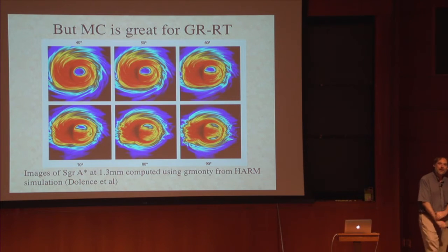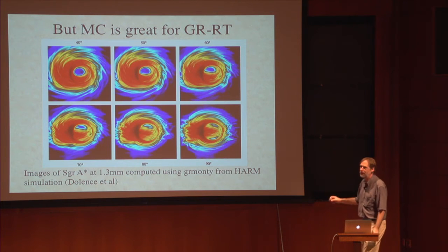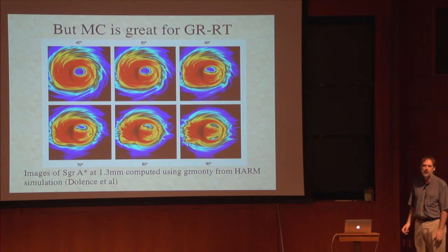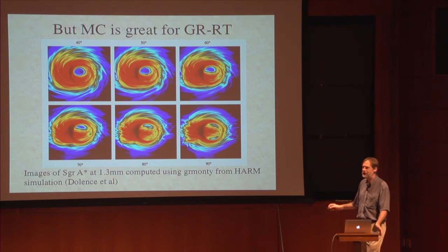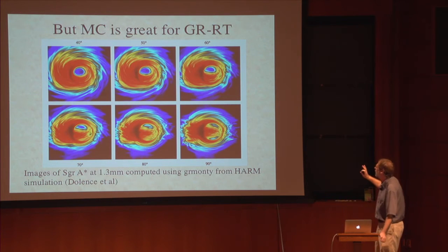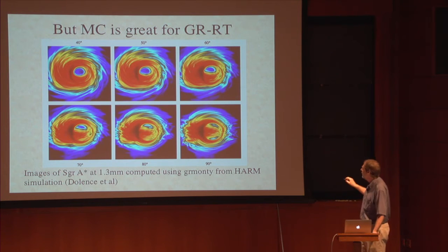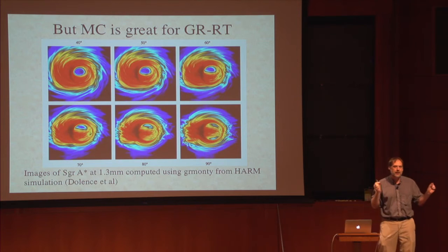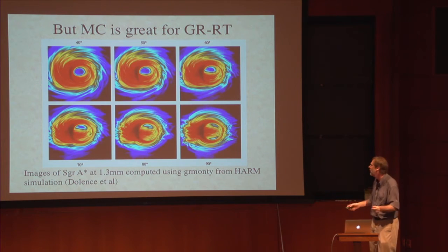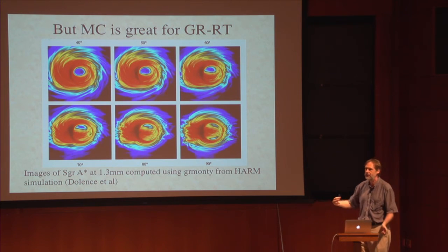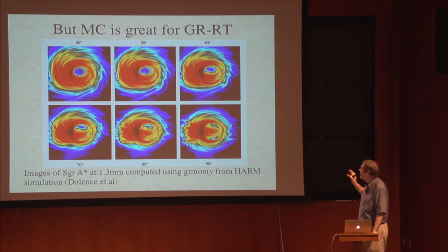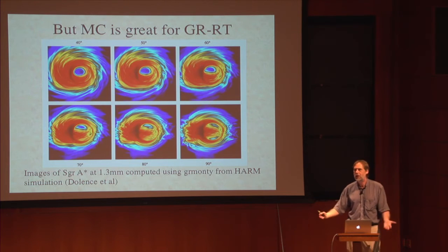Having criticized Monte Carlo, let me say it's really great actually, especially for general relativistic problems where following photons along geodesics is complicated. These beautiful images from Josh Dolence and Charles Gammie show what the flow in Sagittarius A* might look like at 1.3 millimeters for an event horizon telescope at different inclinations of the disk — no noise, absolutely beautiful. Monte Carlo, when applied to problems where you're not radiation pressure dominated, can look beautiful. Moreover, we're making images here — you can cover the image plane with as many particles as you want; you're not sampling every three-dimensional point to compute an Eddington tensor. Monte Carlo certainly has its place for all kinds of problems.